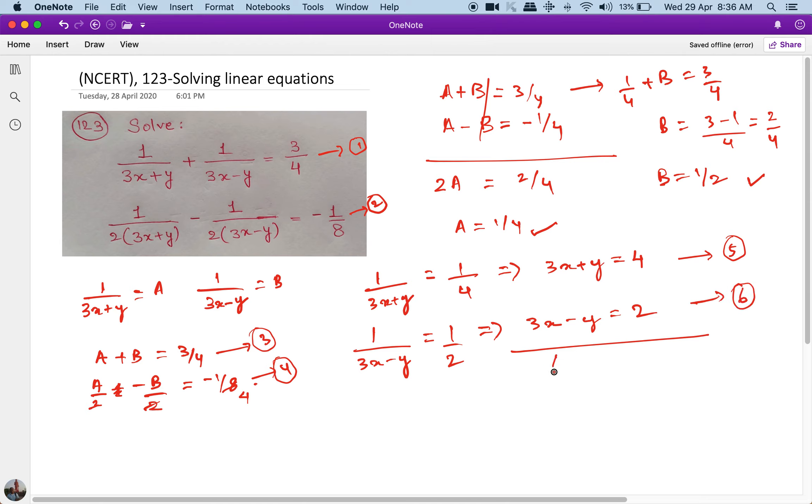Now adding 5 and 6, I get 6x is equal to 6, which implies x is equal to 1. And if I put x is equal to 1 in equation 5, I get 3 into 1 plus y is equal to 4, which implies that y is equal to 1 as well.